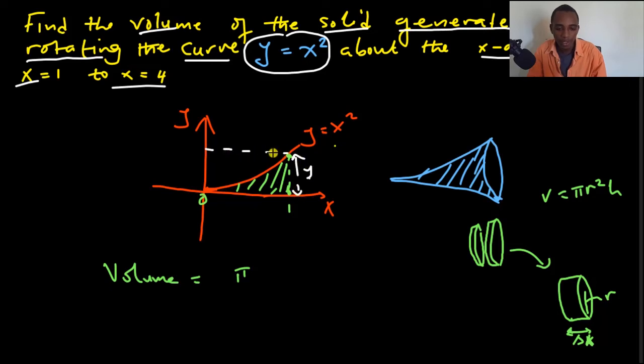So that's pi y squared, and then our height or the distance between the two circular ends is going to be delta x.